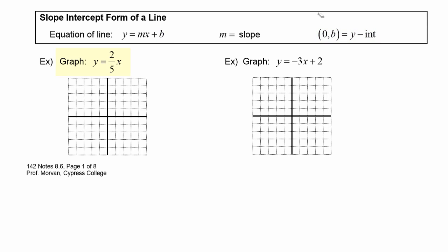In this first example we graph y equals 2 fifths x. This tells us the y-intercept is (0, 0) because there's no constant term, so we know that's a point on the graph. From there we use the slope of 2 fifths: go up by 2 and to the right by 5 to find another point on the graph. Then we connect the two points to draw the line — and there's the graph of y equals 2 fifths x.